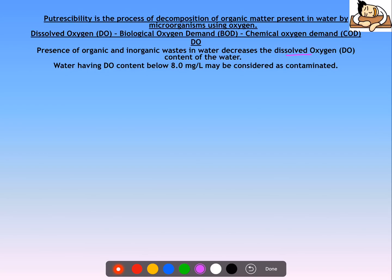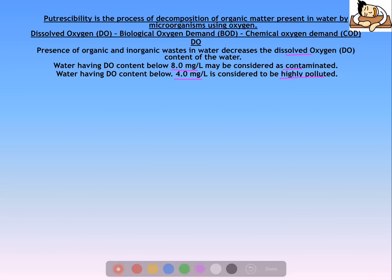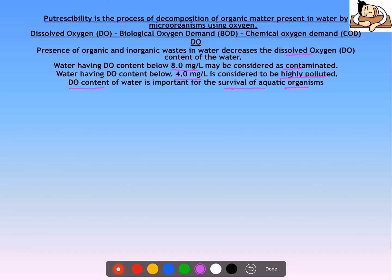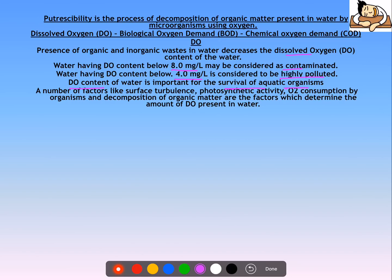If water has a DO content below 8 mg per liter, it is considered to be contaminated and highly polluted. DO content of water is important for the survival of aquatic organisms. Factors like surface turbulence, photosynthetic activity, oxygen consumption by organisms, and decomposition of organic matter determine the amount of DO present in water.